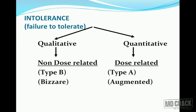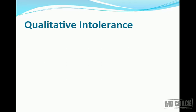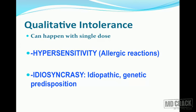Qualitative intolerance is not tolerating a drug because of some inherent quality of the drug itself and something inside the patient — it is non-dose related and also called a Type B or bizarre reaction. Quantitative intolerance is dose-related and also called Type A or augmented intolerance. Qualitative intolerance can happen with a single dose and has two types: hypersensitivity (allergic) reaction, where there is definite proof of an immunological basis, and idiosyncrasy, where no immunological basis can be demonstrated.